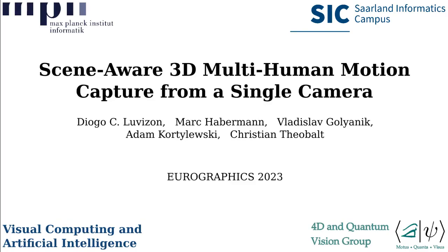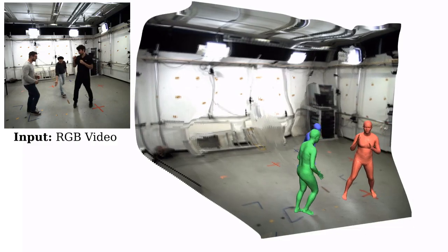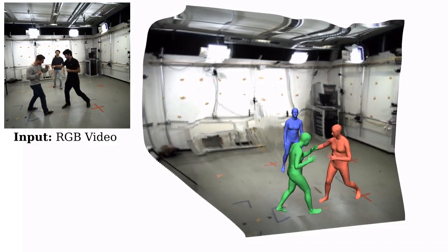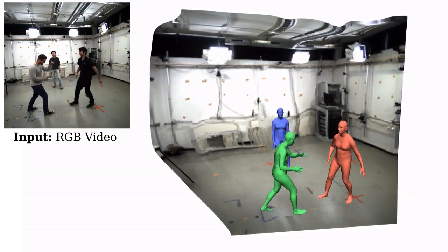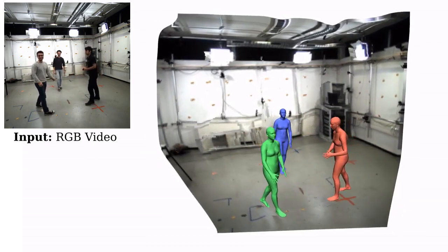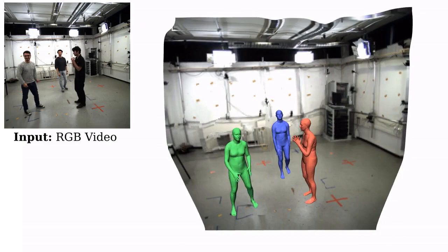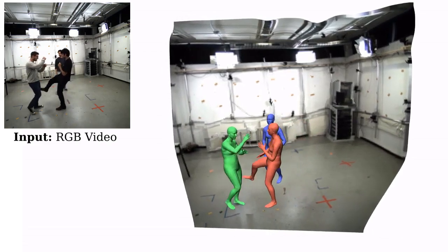We present Scene-Aware 3D Multi-Human Motion Capture from a single camera. Our method takes a single RGB video as input and jointly solves for the 3D position of each human, their articulated pose, their individual shapes, as well as the scale of the scene.